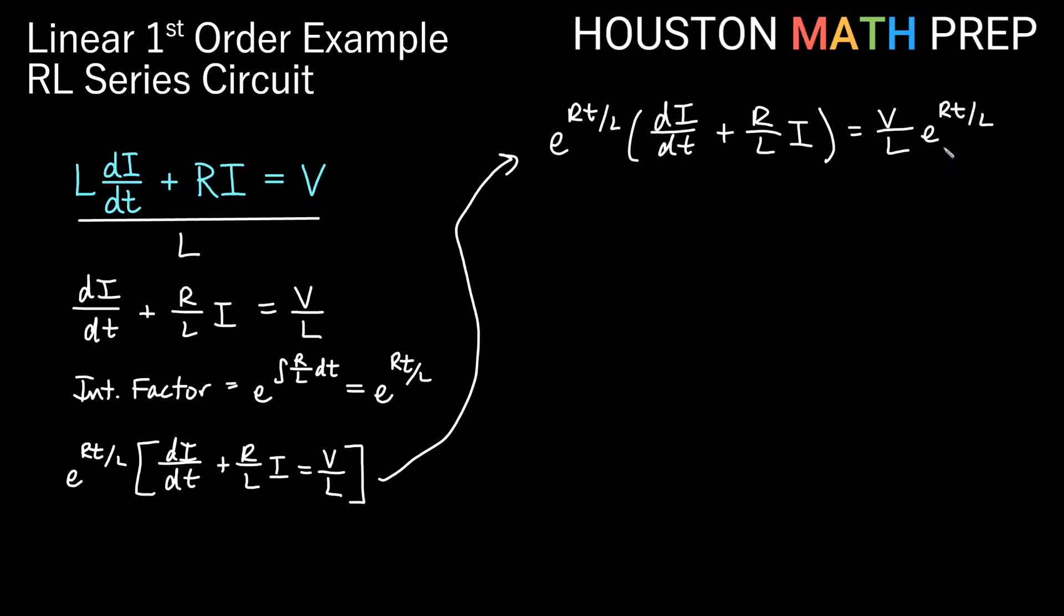Now when we integrate, take the antiderivative with respect to T, remember this is a product rule on the left side of I times your integrating factor. So the antiderivative of all of this product rule with respect to T is just going to give us I times the integrating factor.